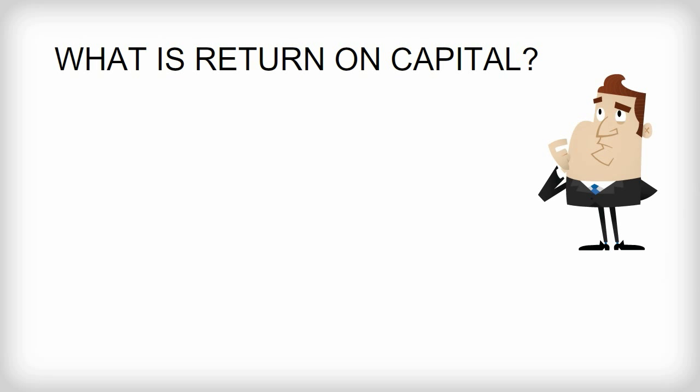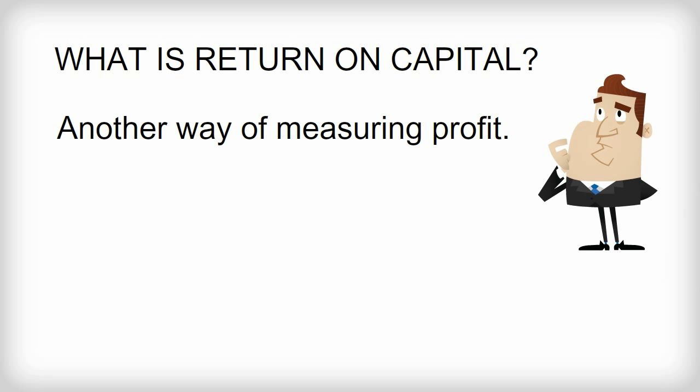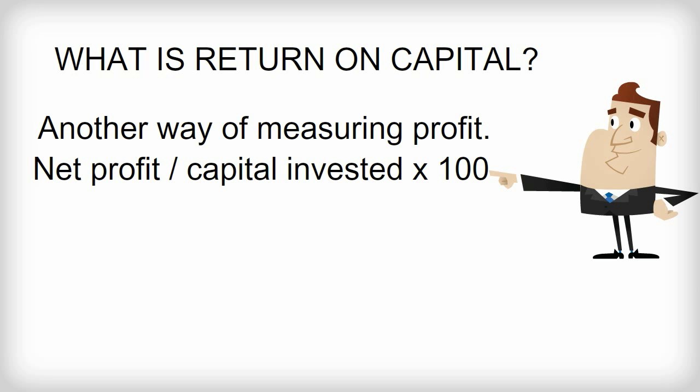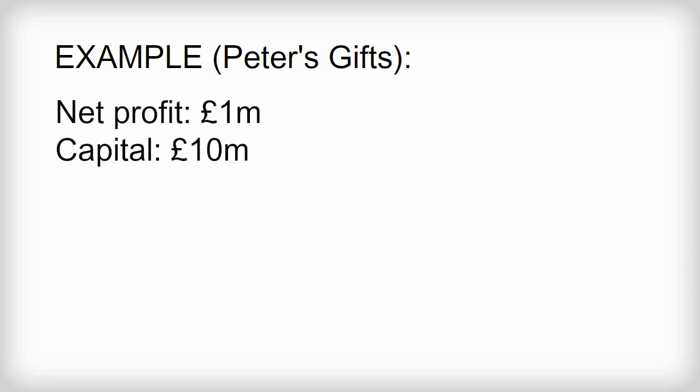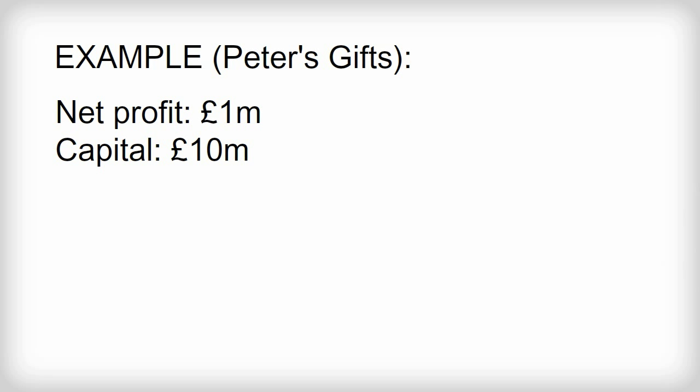Return on capital. A different way of measuring profit is to calculate net profit as a percentage of capital invested. This is called return on capital. As with net profit margin, business owners generally seek to increase return on capital. The formula is net profit divided by capital invested times 100. To illustrate return on capital, look again at the figures for Peter's Gifts. Net profit was £1,000,000 and capital is £10,000,000. So using the formula, return on capital is 1,000,000 divided by 10,000,000 times 100, which equals 10%.